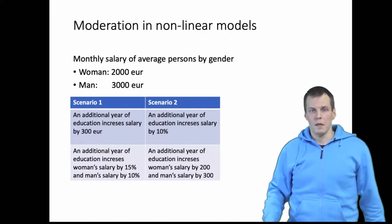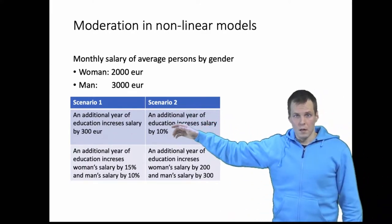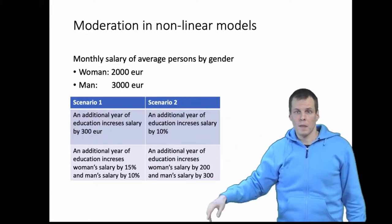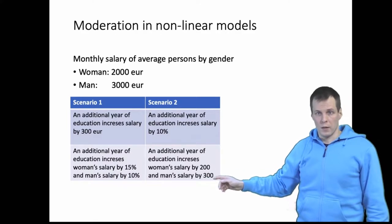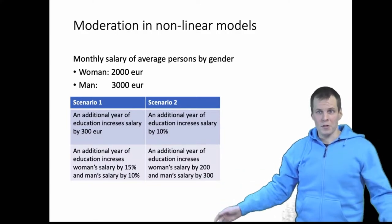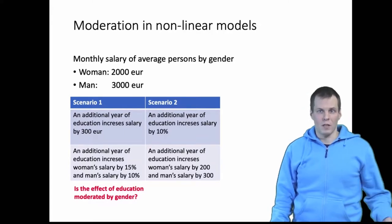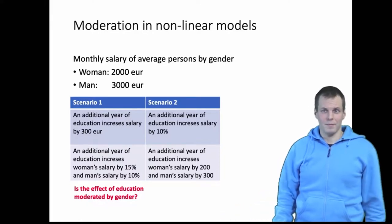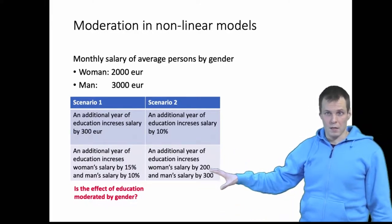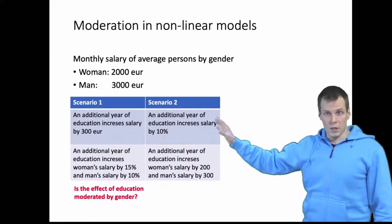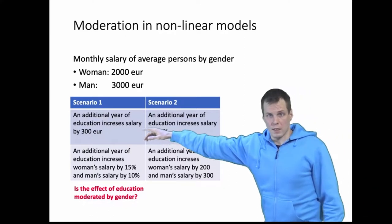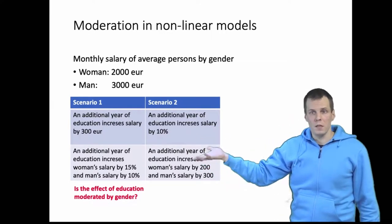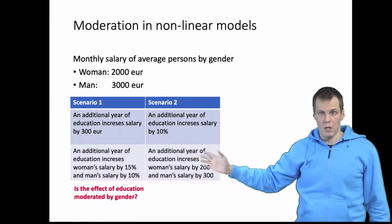To look at it another way: 300 euros is 15% for a woman and 10% for a man, while 10% is 200 euros for a woman and 300 euros for a man. So the question is: is the effect of education moderated by gender? Is the effect the same? It depends on what kind of question we're asking — whether we interpret this as a moderation effect depends on whether we are interested in the absolute increase or relative increase.